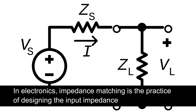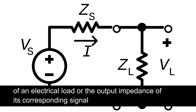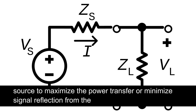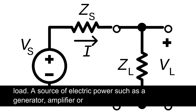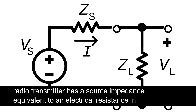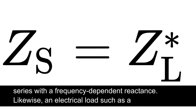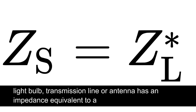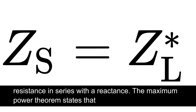In electronics, impedance matching is the practice of designing the input impedance of an electrical load or the output impedance of its corresponding signal source to maximize the power transfer or minimize signal reflection from the load. A source of electric power such as a generator, amplifier or radio transmitter has a source impedance equivalent to an electrical resistance in series with a frequency-dependent reactance. Likewise, an electrical load such as a light bulb, transmission line or antenna has an impedance equivalent to a resistance in series with a reactance.